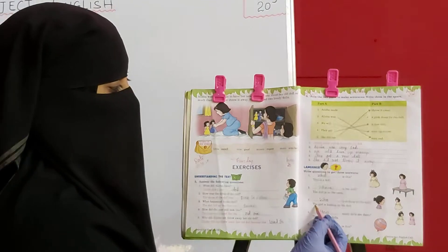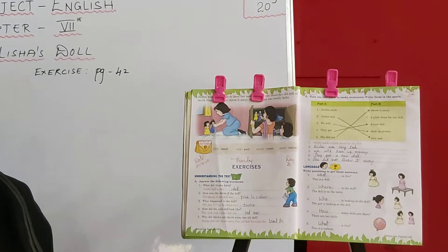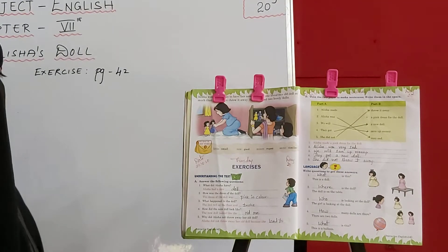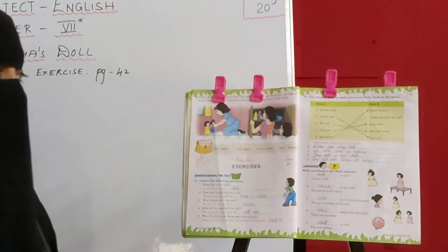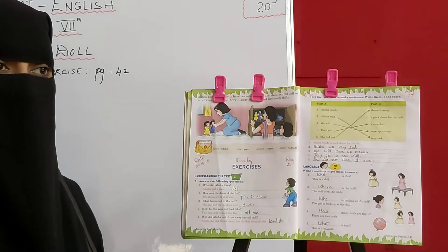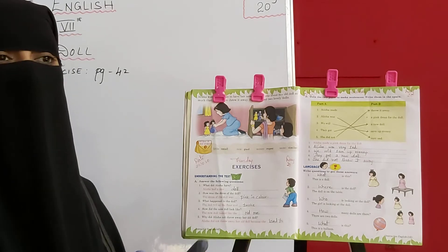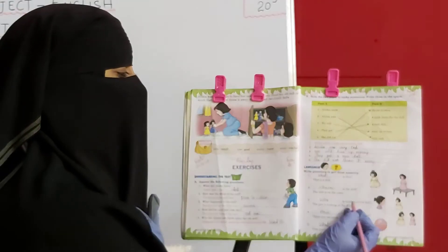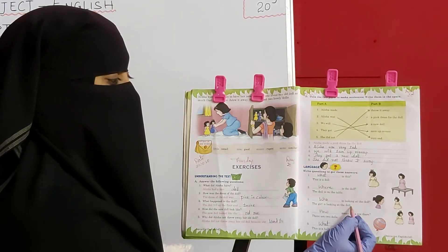Now next one: The girl is looking at the doll. Ladki doll ko dekh rahi hai. Toh iska question kya banayenge hum? Ladki doll ko dekh rahi hai. Toh iska question aayega: Who is looking at the doll? Kaun doll ko dekh rahi hai? Ladki doll ko dekh rahi hai. So yahaan question aayega: Who is looking at the doll? Answer will be: The girl is looking at the doll.